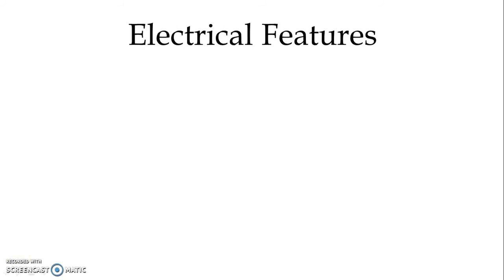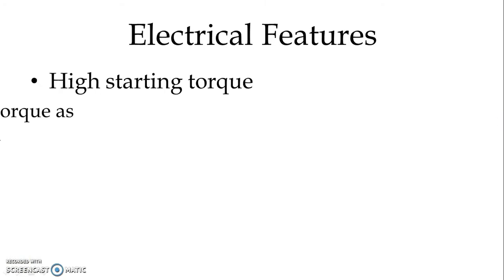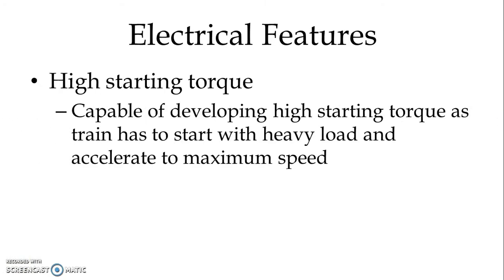Now let us discuss some of the electrical features. The first is high starting torque. The traction motor should be capable of developing high starting torque, as the train has to start with a heavy load and accelerate to maximum speed. So the traction motor must be capable of developing very high starting torque.